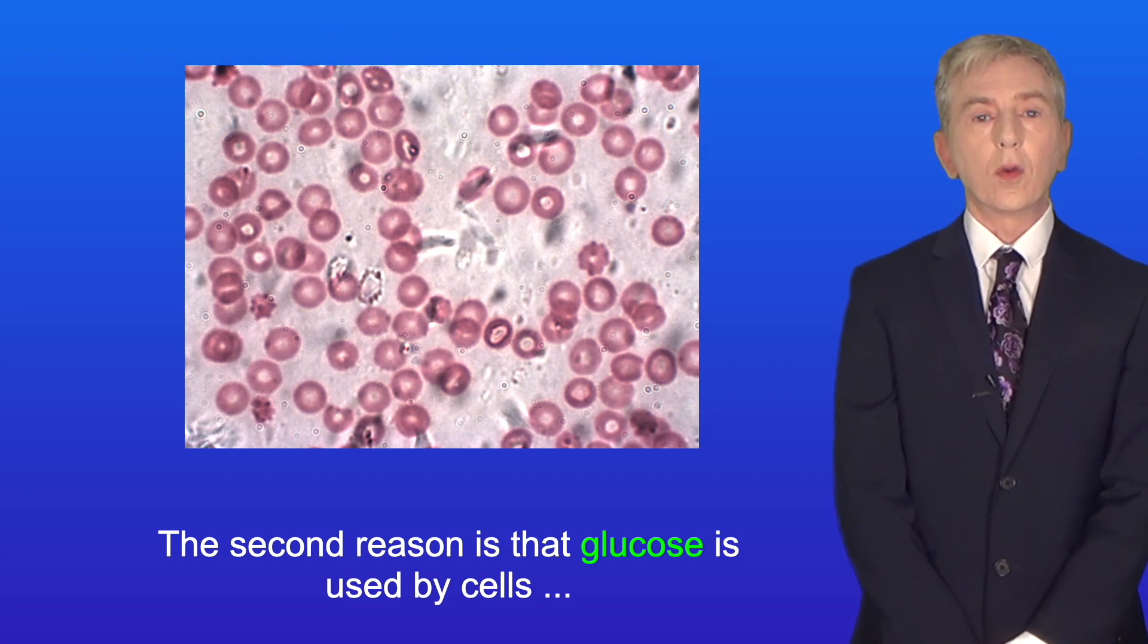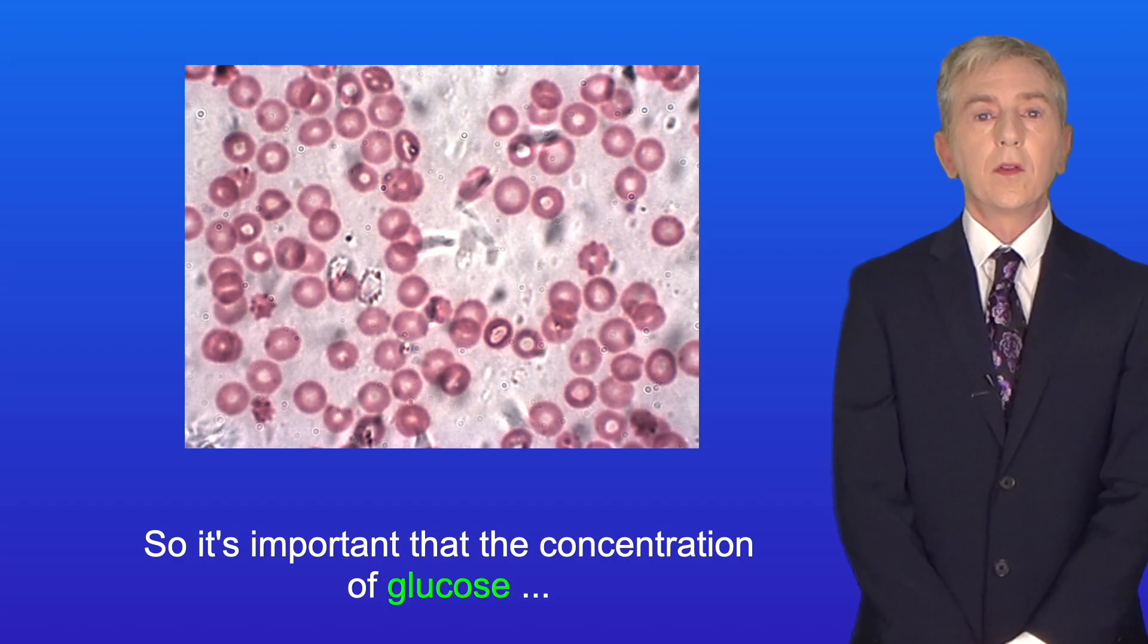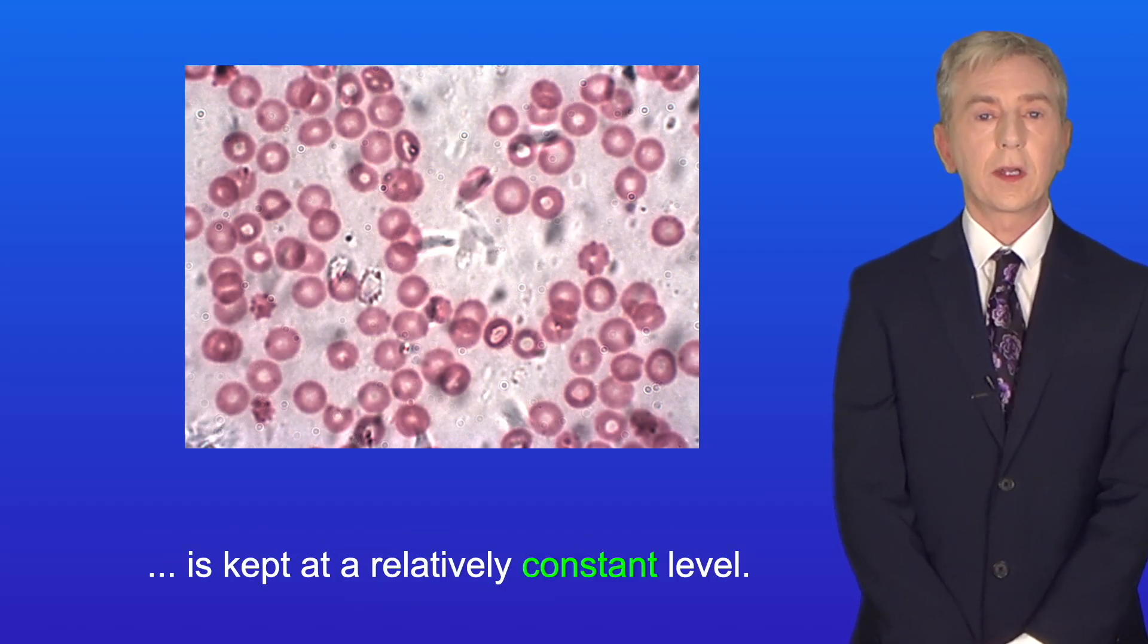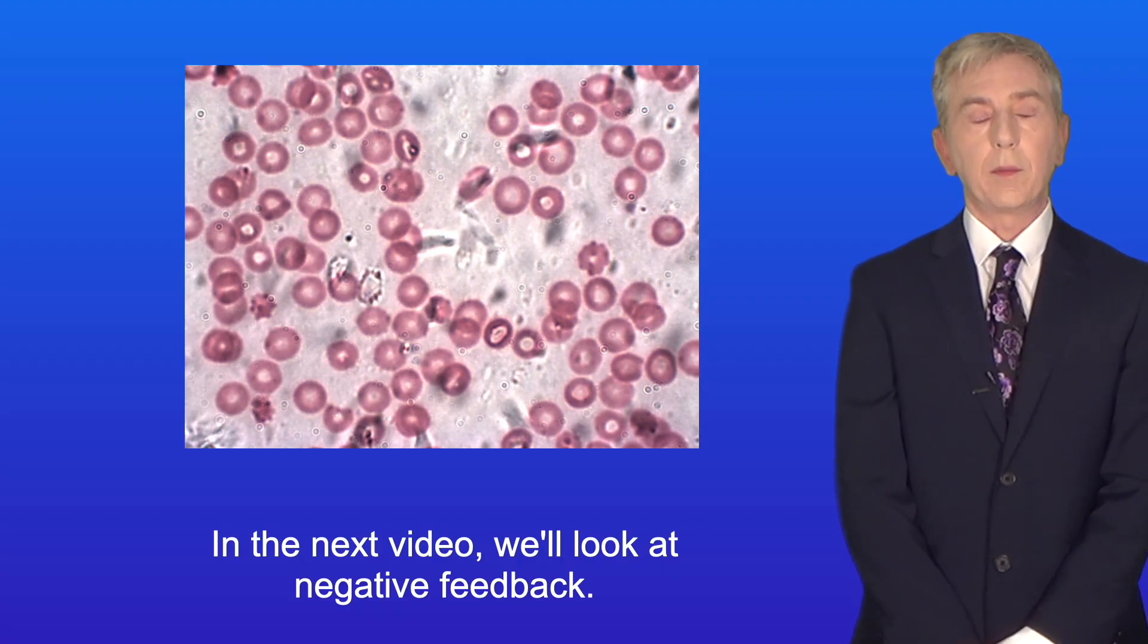The second reason is that glucose is used by cells to release energy via respiration. So it's important that the concentration of glucose is kept at a relatively constant level. And we'll be looking at how the blood glucose concentration is regulated in later videos. In the next video, we look at negative feedback.